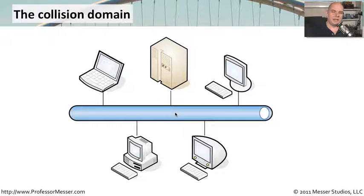Now, when these networks got really large, we started getting tens or even hundreds of people on a single hub. It became very difficult to communicate because there were so many opportunities to have that data collide right there on the network.